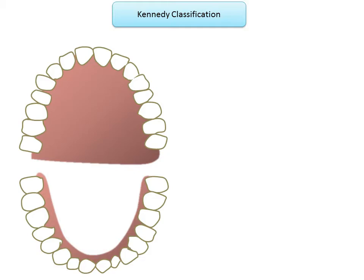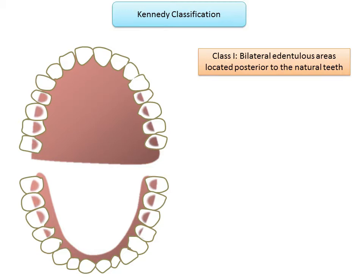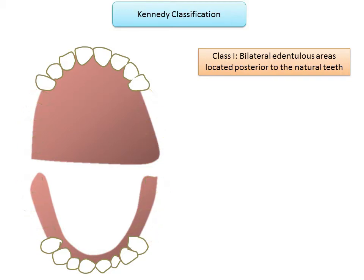Edentulous areas other than those that determine the basic classes are designated as modification spaces. Class 1 refers to bilateral edentulous areas located posterior to natural teeth — that is, there are two edentulous spaces in the posterior region without any teeth posterior to them. This is a free-end edentulous area bilaterally.